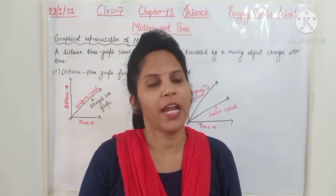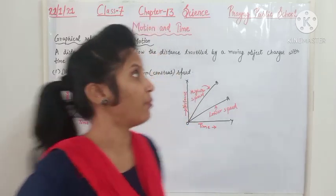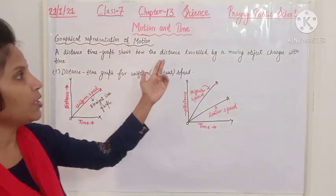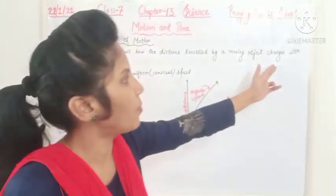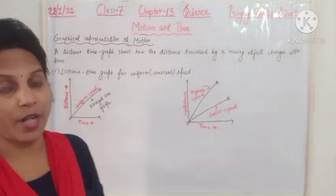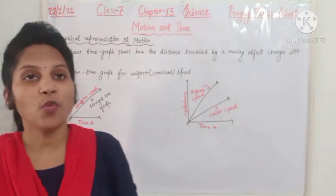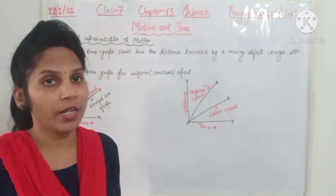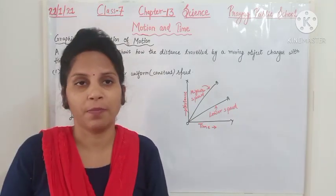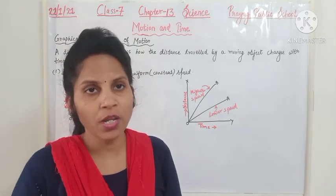The motion of an object can be represented by a diagram called a distance-time graph. A distance-time graph shows how the distance traveled by a moving object changes with time. It is a diagrammatic representation of how a moving object changes with respect to time.